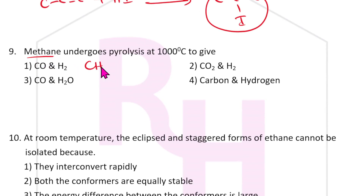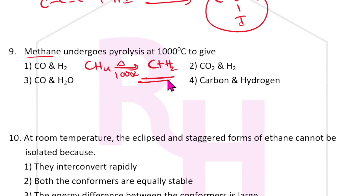Methane undergoes pyrolysis: CH4 at 1000°C gives C + H2. Carbon plus hydrogen is formed. So the answer is fourth one.